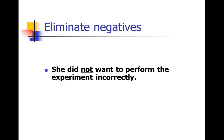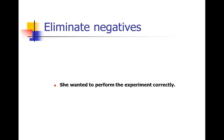Here's another example. She did not want to perform the experiment incorrectly. You can see that kind of double negative there, right? So how do we turn that one into a positive? She wanted to perform the experiment correctly. That's obviously much clearer.